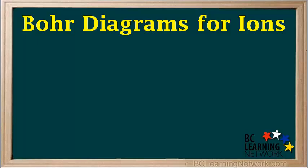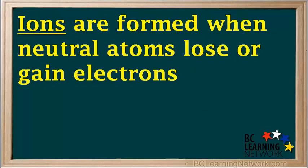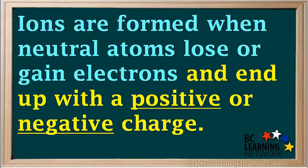This video shows you how to draw Bohr diagrams for ions, showing protons, neutrons, and electron arrangements. Ions are formed when neutral atoms lose or gain electrons, and end up with a positive or negative charge.